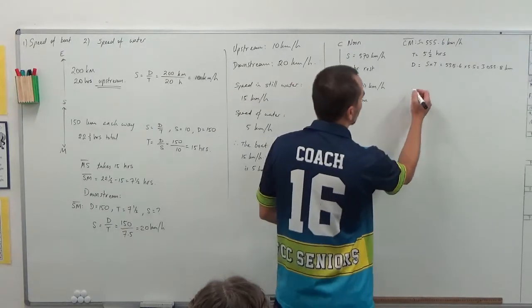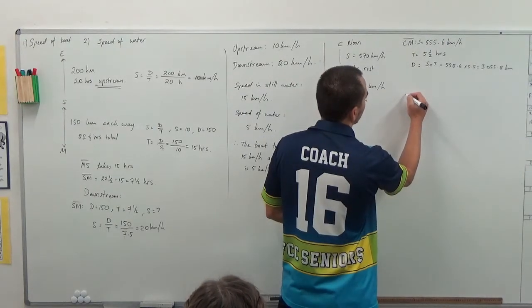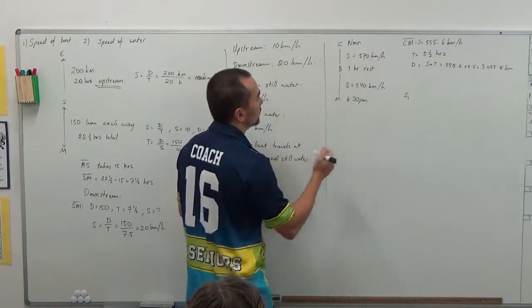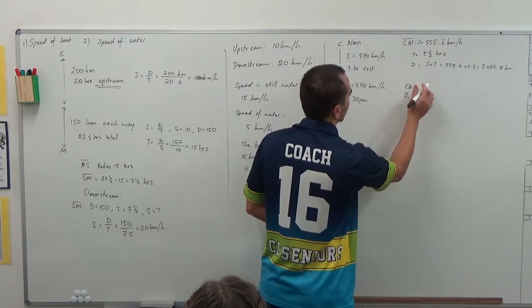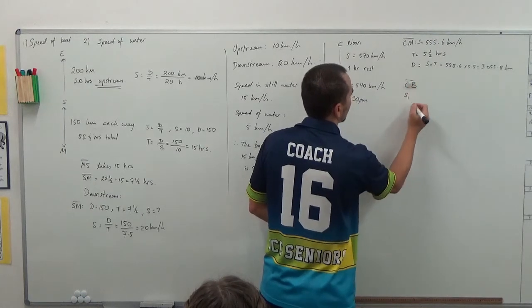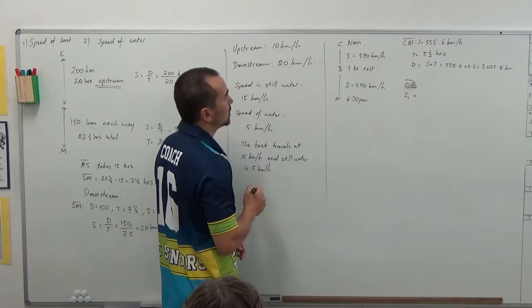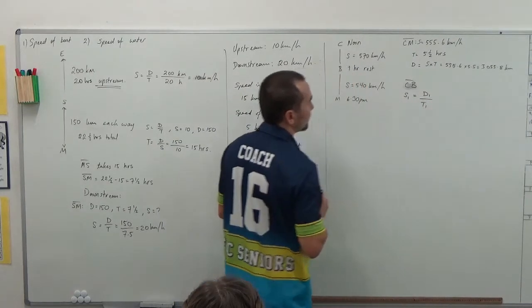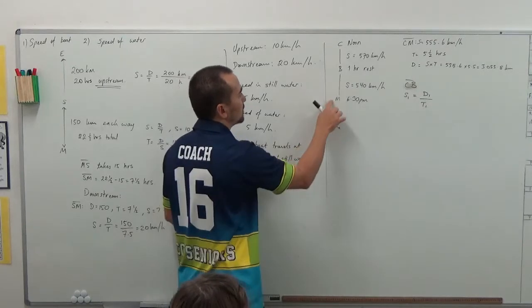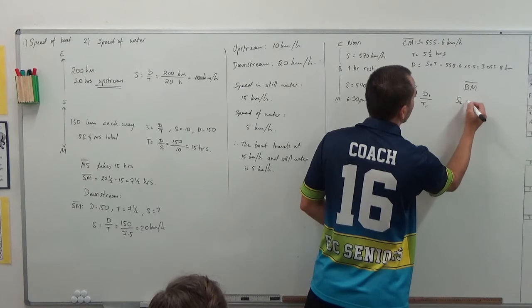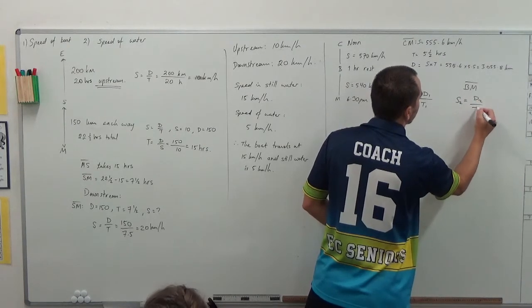so really it's a two-part question where we have the speed of the first journey from C to B. And the speed will be equal to distance over time. And from Brisbane to Melbourne, we have a second speed, a second distance, and a second time.